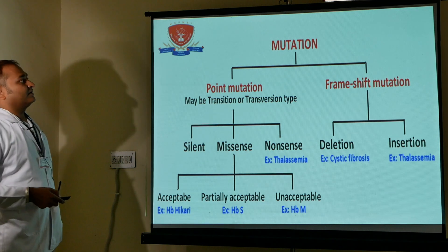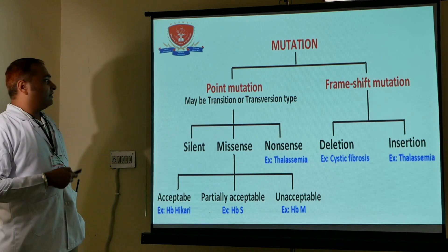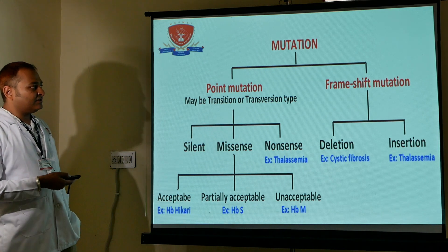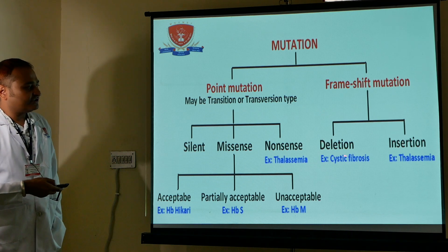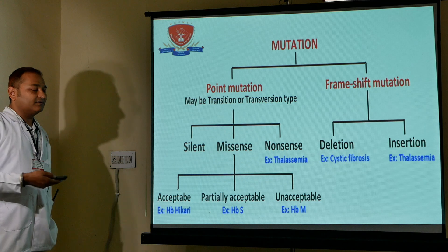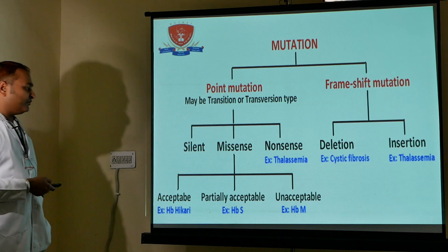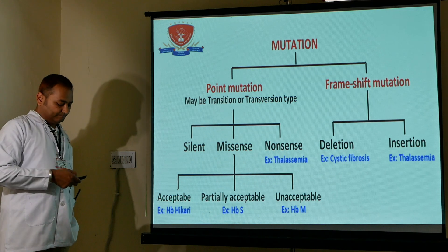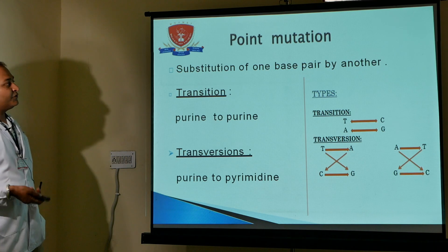There are two classes of mutation: point mutation and frameshift mutation. Point mutations are further classified into silent, missense, and nonsense mutations. Frameshift mutations are classified into deletion and insertion. Examples of related diseases include cystic fibrosis and thalassemia. Missense mutations are further classified as acceptable, partially acceptable, and unacceptable.